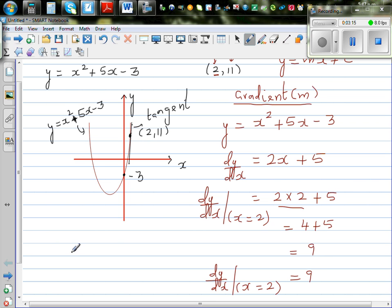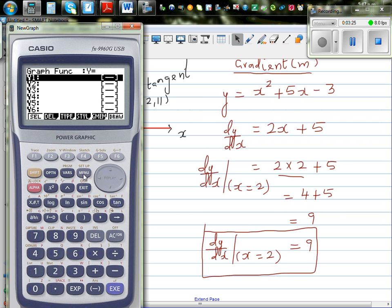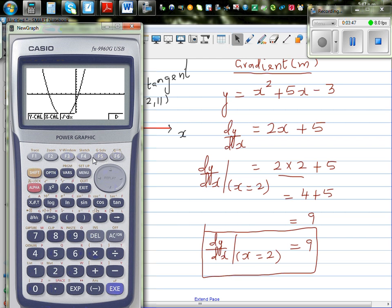Let me show you how you can use a graphic calculator to check your answer. It's always good to check your answer if you have the tool to do it. Let me type in x squared. The equation is x squared plus 5x minus 3. I have set the scale from minus 10 to 10 and draw it. Just to show you the point when x is 2, y is 11. It's somewhere here.